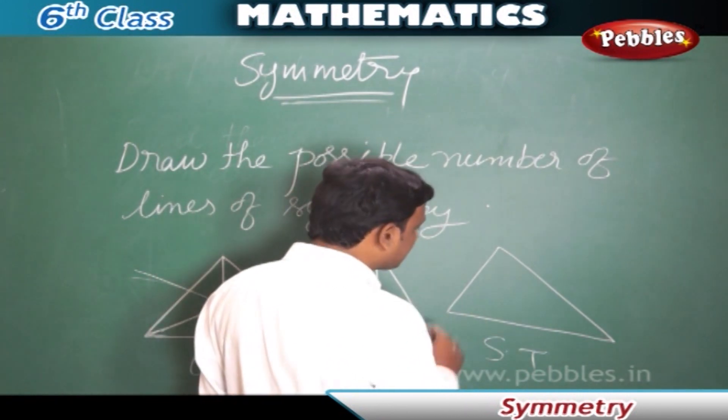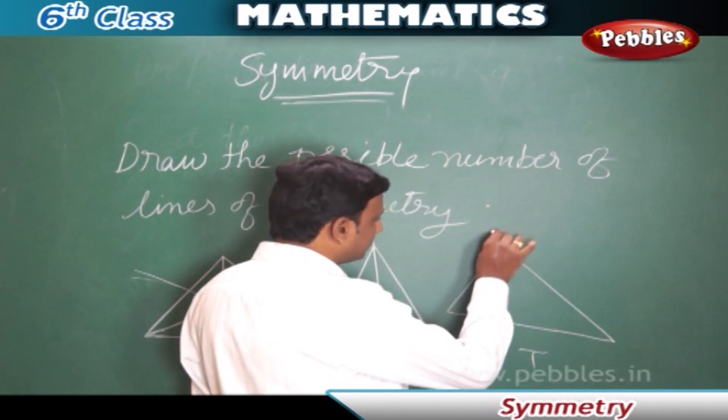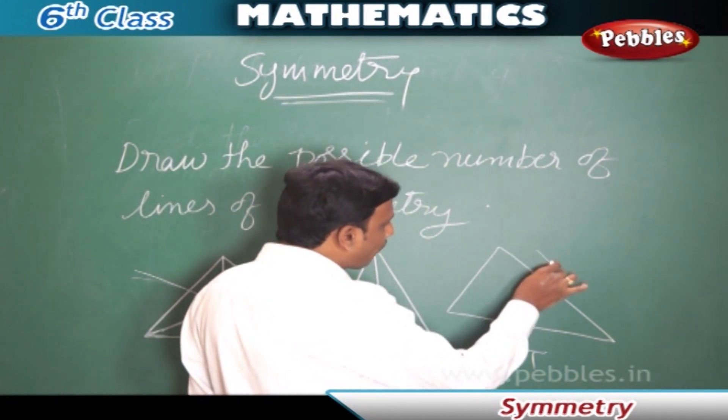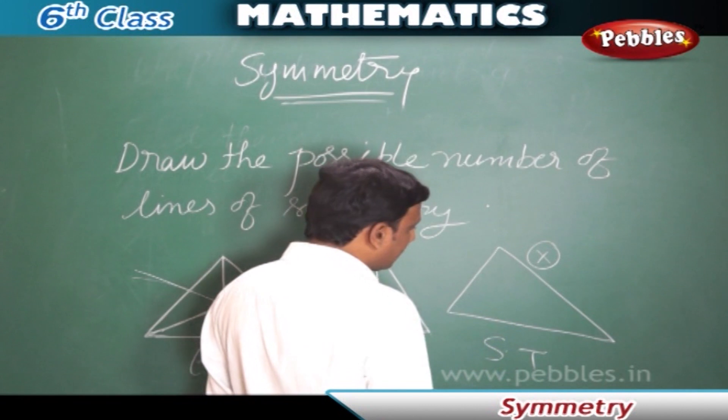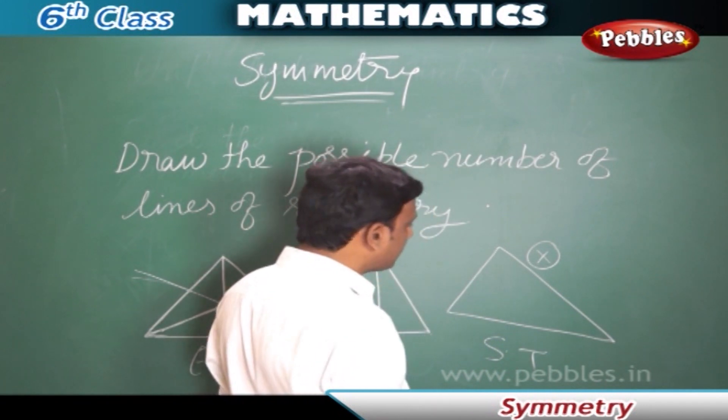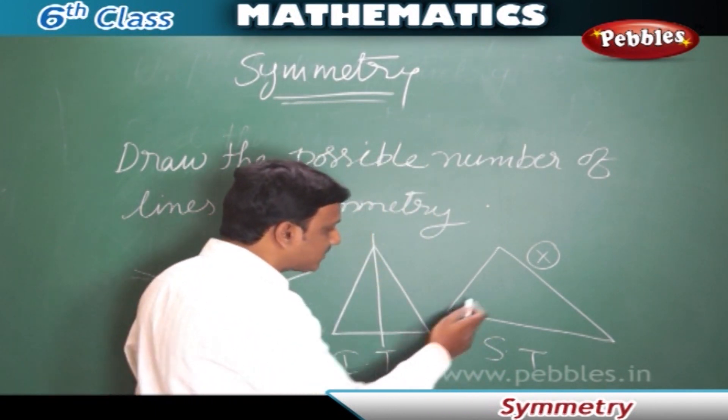Now let us look at the scalene triangle — there is no possibility of making a line of symmetry here because the scalene triangle is not symmetric.